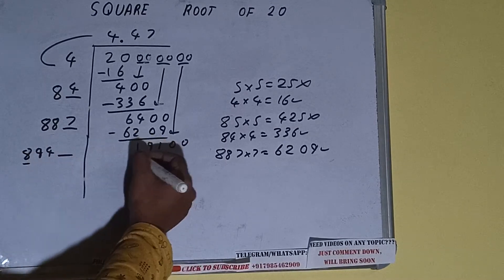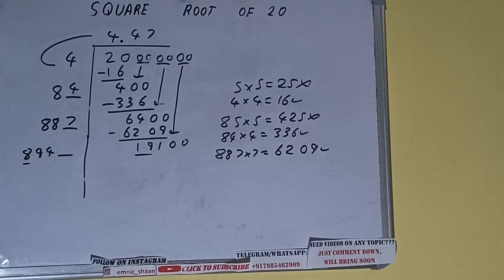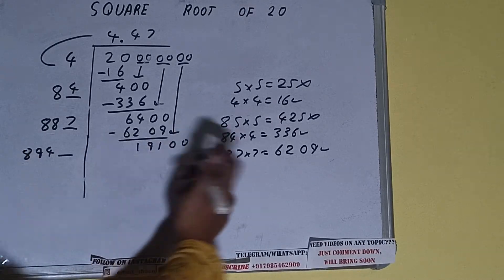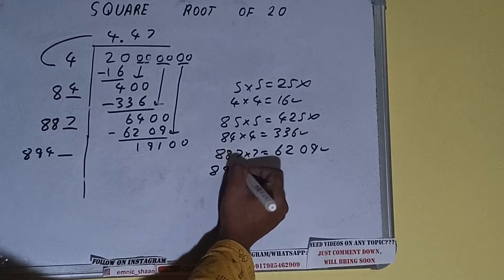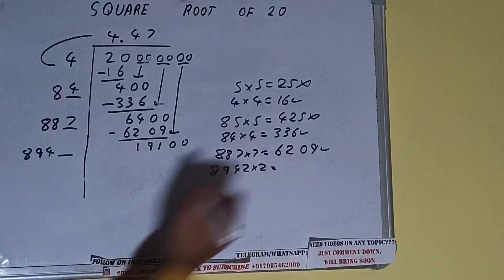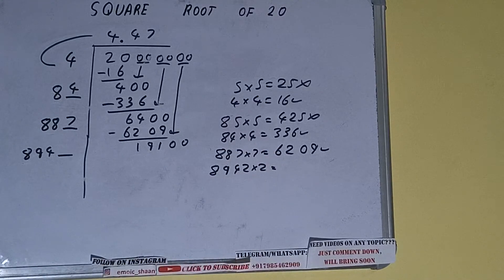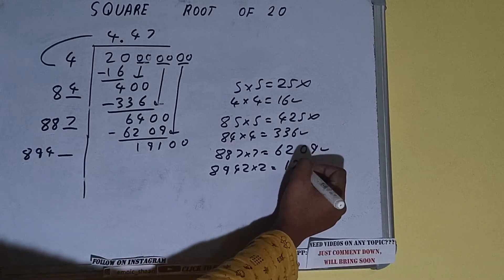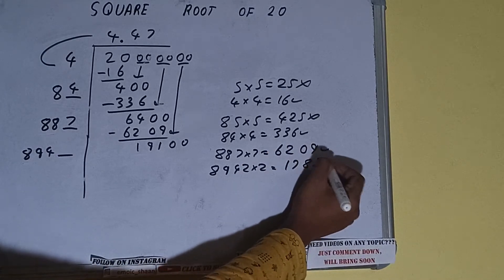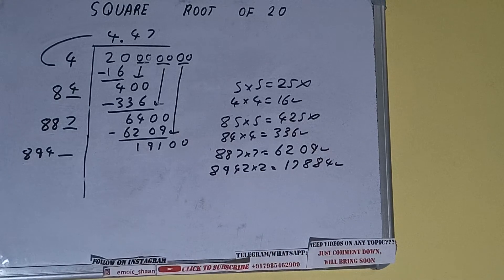Now compare this 8 with this 19. So 8 times 2 is 16, right? So we can try it. 2 times 8942 into 2, we can try. It will be 17,884, which is good to use.